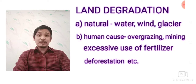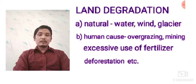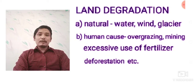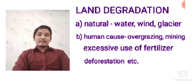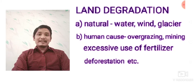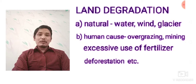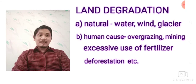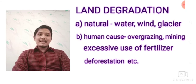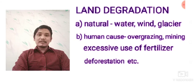Overgrazing means when we let cattle roam freely on open fields or forests, they eat up all vegetation. We know that plant roots generally protect the soil from erosion. When cattle eat up everything, there is no new vegetation left to protect the soil from erosion. Mining and excessive use of fertilizers also degrade soil quality, along with deforestation.